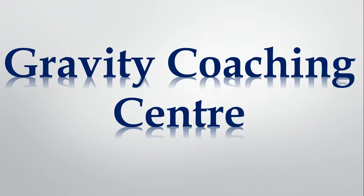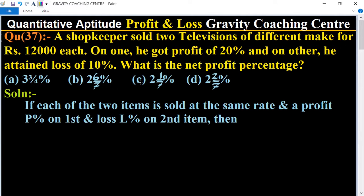Welcome to our channel, Gravity Coaching Centre. Quantitative Aptitude, Chapter Profit and Loss, Question Number 37. A shopkeeper sold two televisions of different make for rupees 12,000 each. On one he got profit of 20% and on the other he attained loss of 10%.